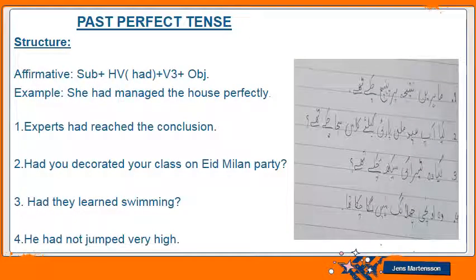Now we will learn the use of past perfect tense. Past perfect tense refers to a time earlier than before now. It is used to make clear that one event happened before another in the past, and you need two past events to refer to that. It does not matter which event is mentioned first. Sometimes both events are described, and sometimes they indicate that something had already happened before another event.